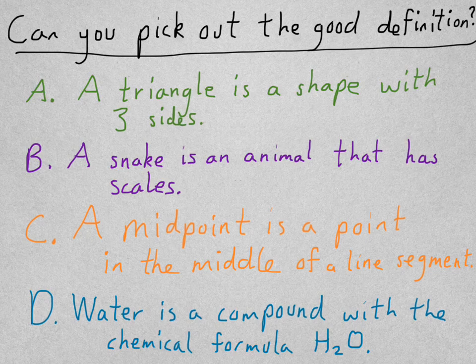Here we go. So, now A looks pretty good. A triangle is a shape with three sides. I'm thinking, some of you may have gone for that one. It has one problem though. Shape is not a very well defined term. It's not very specific.